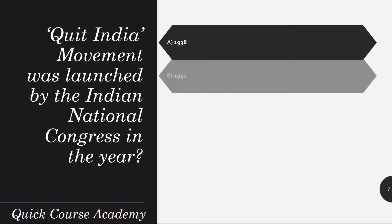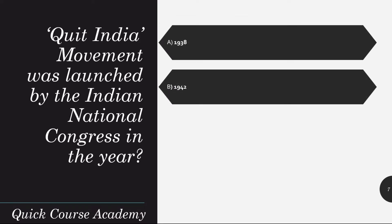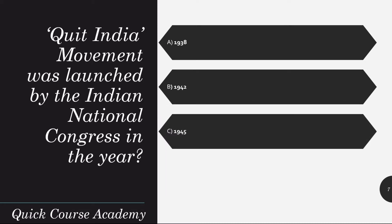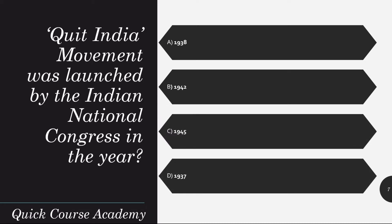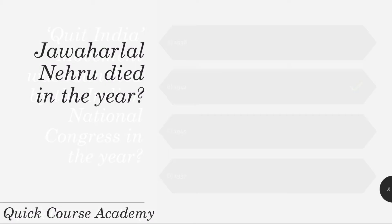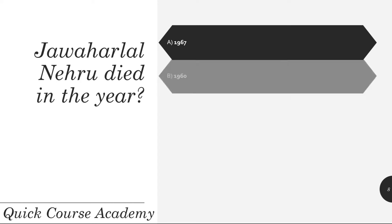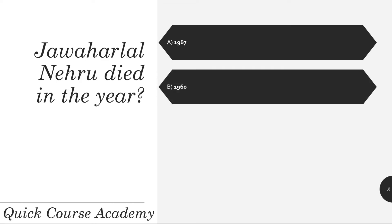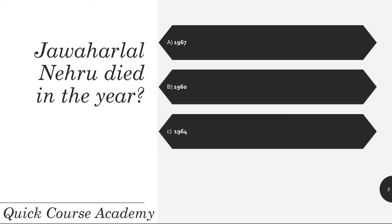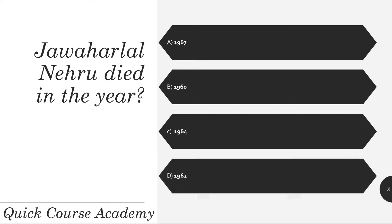1938, 1942, 1945, or 1937? And the correct answer is 1942. Jawaharlal Nehru died in the year 1960, 1964, or 1962? And the correct answer is 1964.